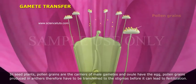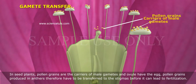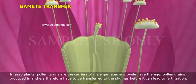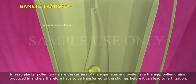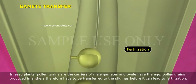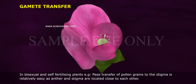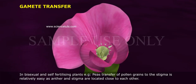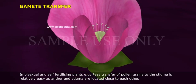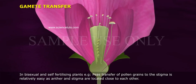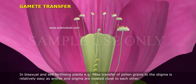In seed plants, pollen grains are the carriers of male gametes and ovules have the egg. Pollen grains produced in anthers have to be transferred to the stigmas to lead to fertilization. In bisexual and self-fertilizing plants — for example, peas — transfer of pollen grains to the stigma is relatively easy, as the anthers and stigma are located close to each other.